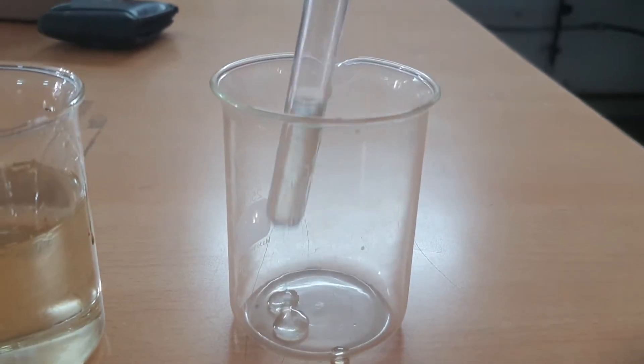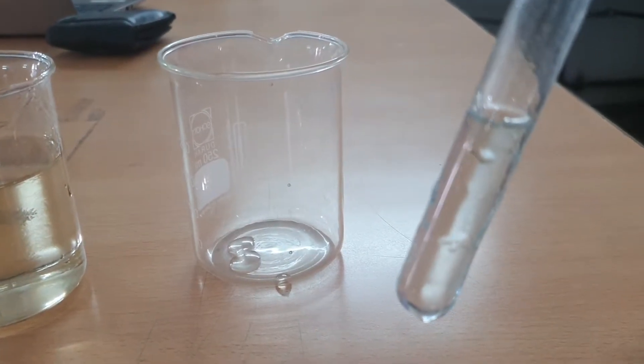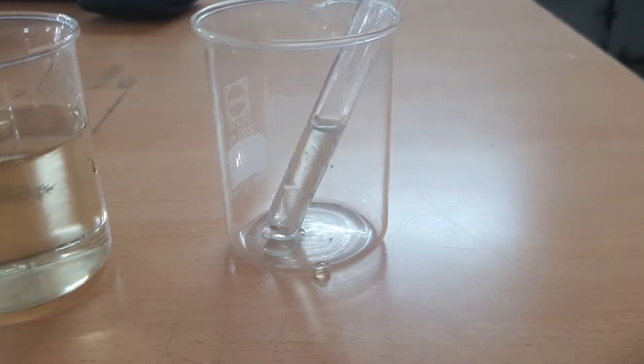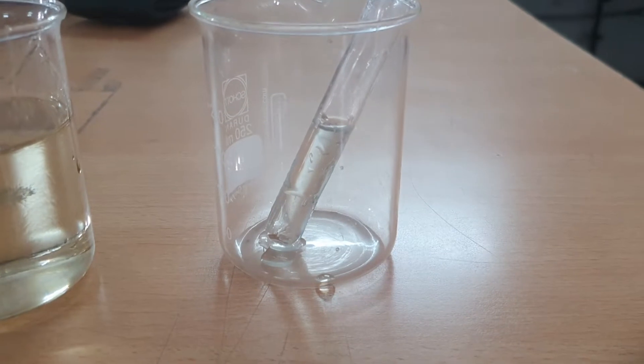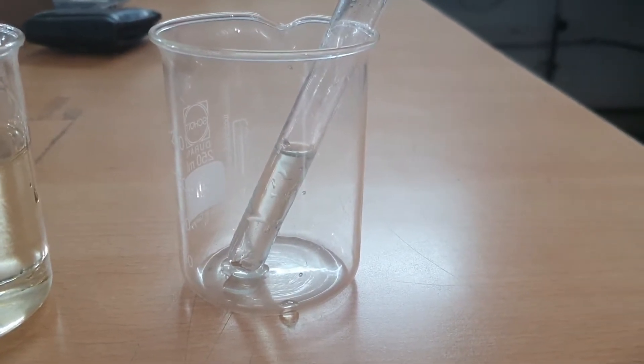Good morning students. Today we will be demonstrating one more experiment of ray optics. In this experiment, we will be showing that if a convex lens is immersed in a liquid whose refractive index is equal to the refractive index of the material of the lens, then it gets invisible.